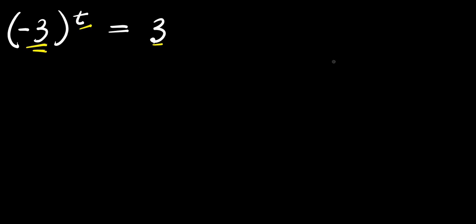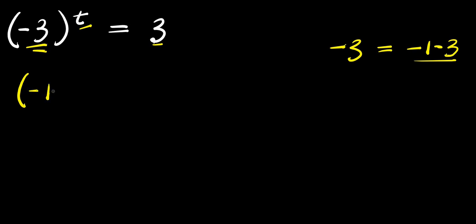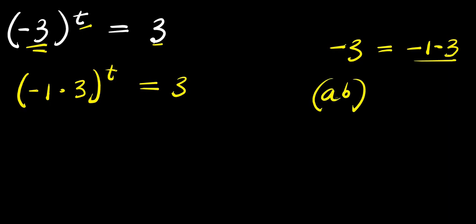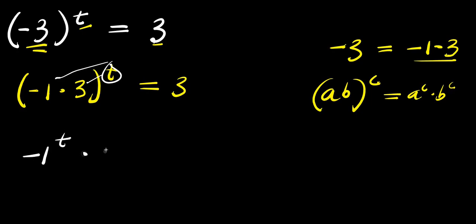I can copy out this negative three. I can express it as negative one times three — negative one times three is negative three. I bring it down here: I have negative one times three raised to the power of t, and this equals three. Now, if you have a times b raised to the power of c, this equals a power c times b power c. So we are going to distribute the exponent t for each of the terms, giving negative one to the power t times three to the power t equals three.